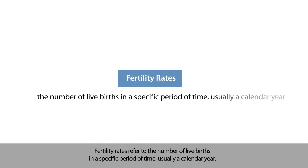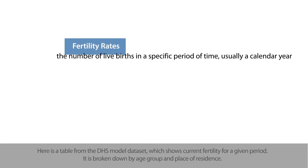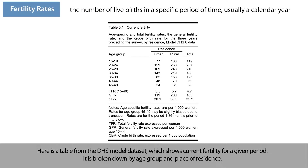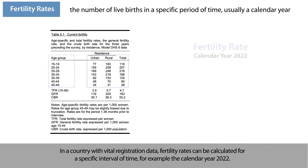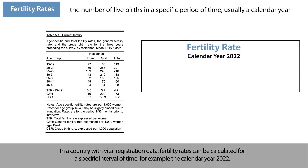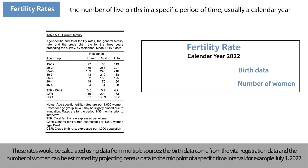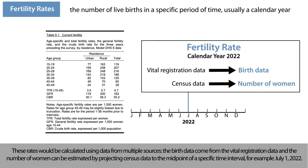Fertility rates refer to the number of live births in a specific period of time, usually a calendar year. Here is a table from the DHS model dataset which shows current fertility for a given period, broken down by age group and place of residence. In a country with vital registration data, fertility rates can be calculated for a specific interval of time, for example the calendar year 2022. These rates would be calculated using data from multiple sources: birth data come from the vital registration data, and the number of women can be estimated by projecting census data to the midpoint of a specific time interval, for example July 1st, 2022.